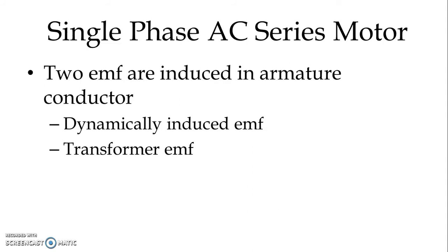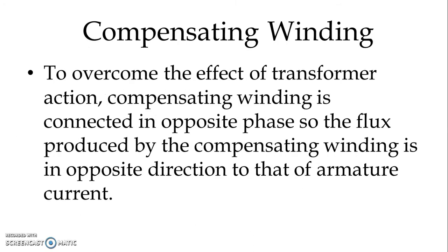The second type of EMF is because of transformer effect. To overcome the effect of transformer action, compensating winding is connected in opposite phase. So the flux produced by the compensating winding is in opposite direction to that of the armature current. So both the different fluxes can compensate each other and we can have least sparking at the brush and we have better commutation.